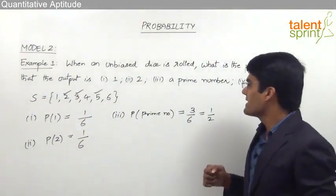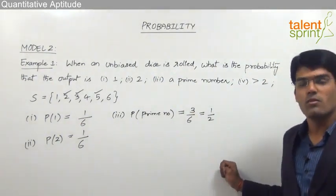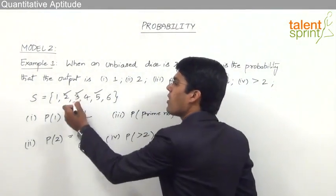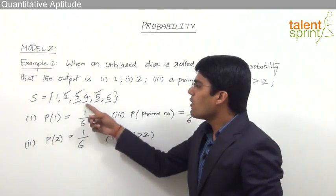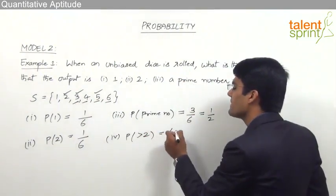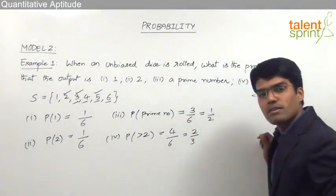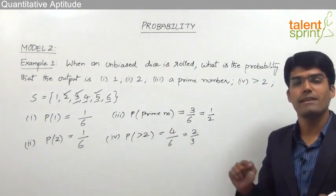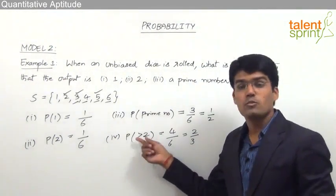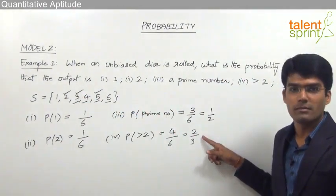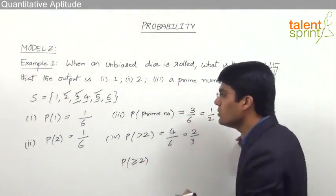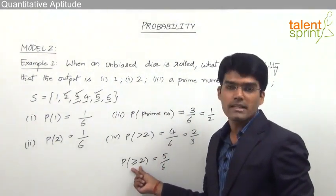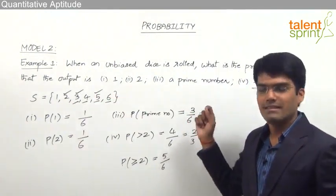The fourth question asks: what is the probability that the output is greater than 2? When we want the output to be greater than 2, it can be 3, 4, 5, or 6 — so there are 4 favorable outcomes. The probability is 4/6, which equals 2/3. Be specific: the question says greater than 2, so we cannot include 2. Only when the question says greater than or equal to 2 can we include 2, giving 5/6.